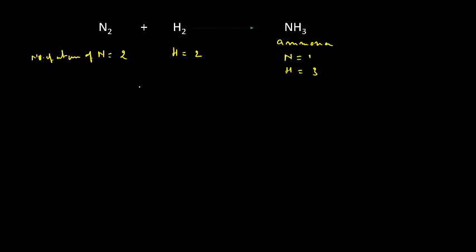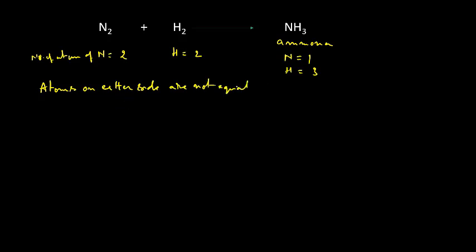See the difference here. On the left side there are two nitrogen atoms, whereas on the right side there is only one nitrogen. So nitrogen atoms are not equal on either side. Similarly, hydrogen atoms on the left side are two and on the right side are three. Atoms of different elements on either side are not equal.